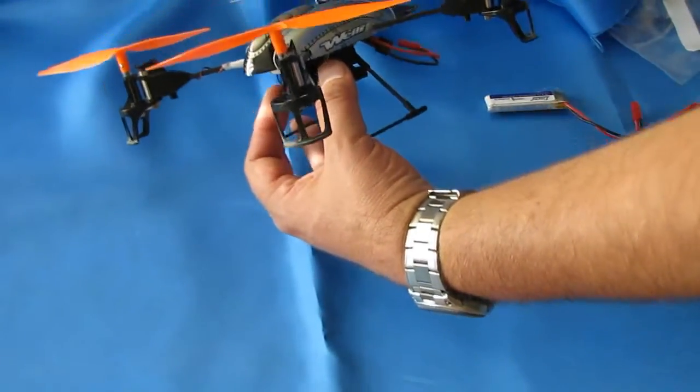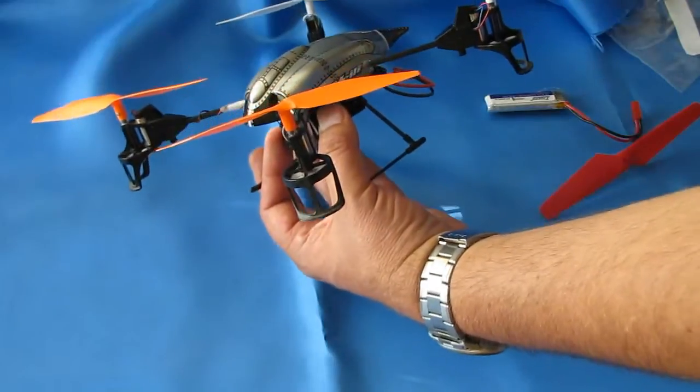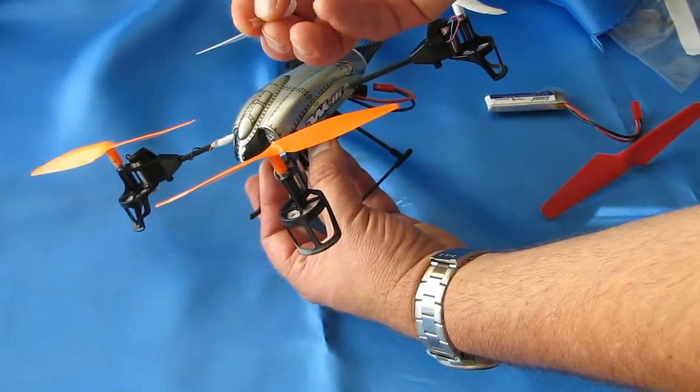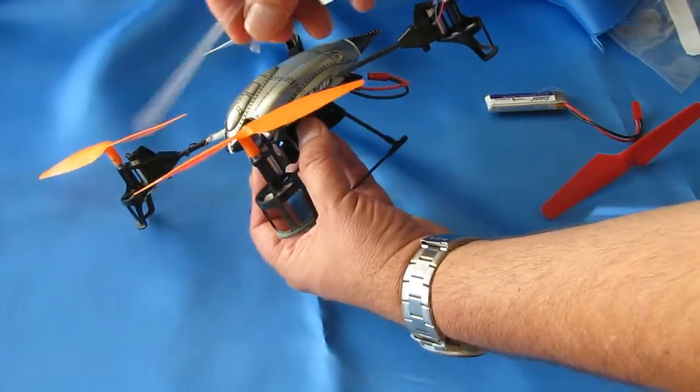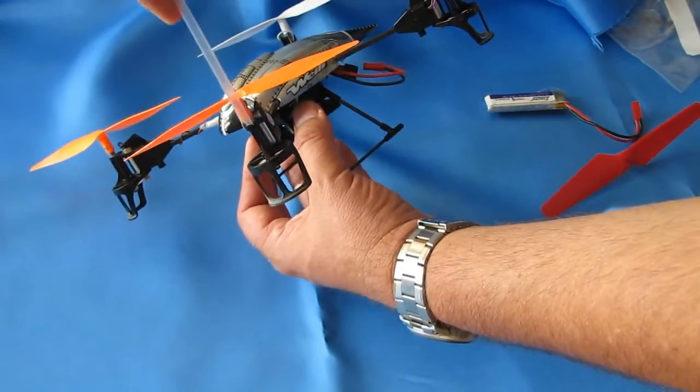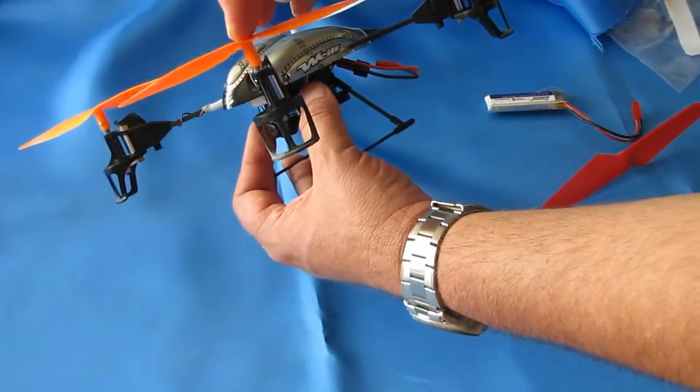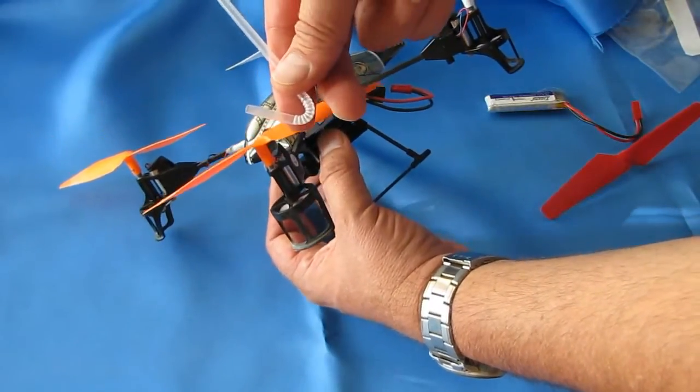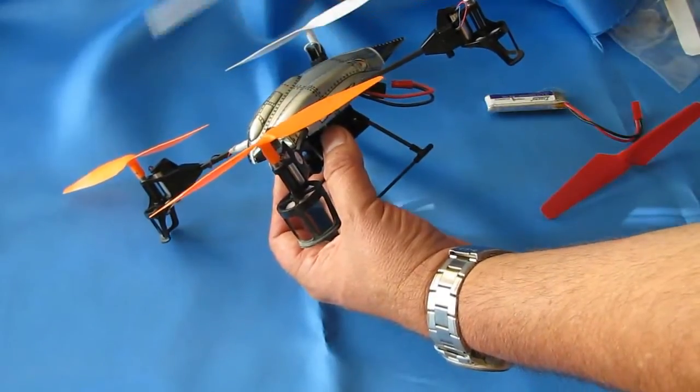I make the spacers out of just a juice box straw. I snip little pieces off here, about 3 millimeters in length each, and I place them around the base of the propellers, just under the propellers. Again, it's a drink box straw, just a simple drink box straw. Works great for spacers on these.